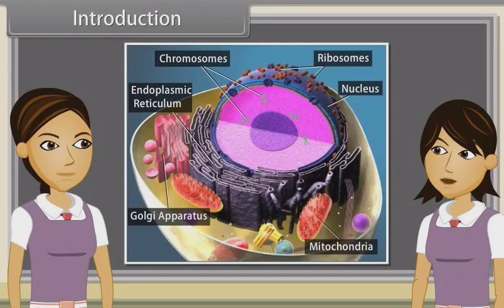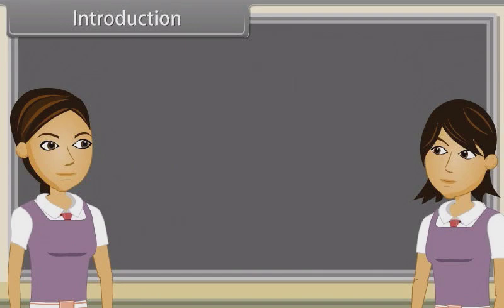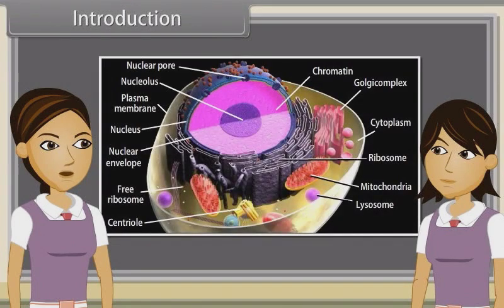We have discussed structure of eukaryotic cells and structure and functions of cell membrane and cell wall already. Now we will discuss structure of endomembrane systems. We will also observe structure of endoplasmic reticulum, Golgi apparatus, lysosomes, vacuoles, mitochondria, plastids and ribosomes.